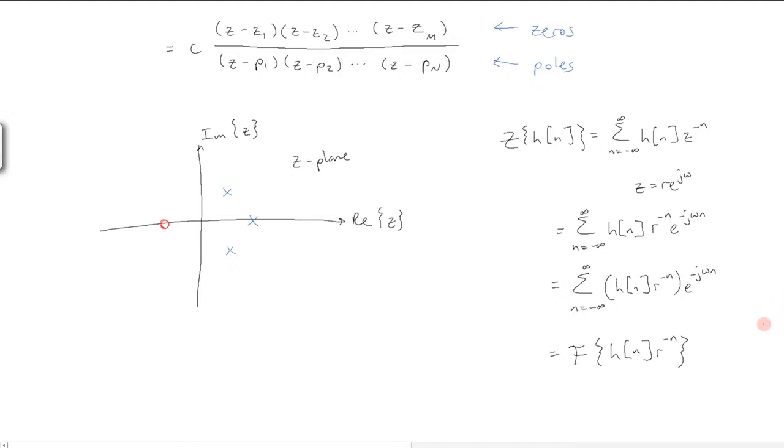As we saw with the Laplace transform, we're multiplying our signal by something else, R to the minus n in this case, and then taking the Fourier transform. That's another way to look at the Z-transform.